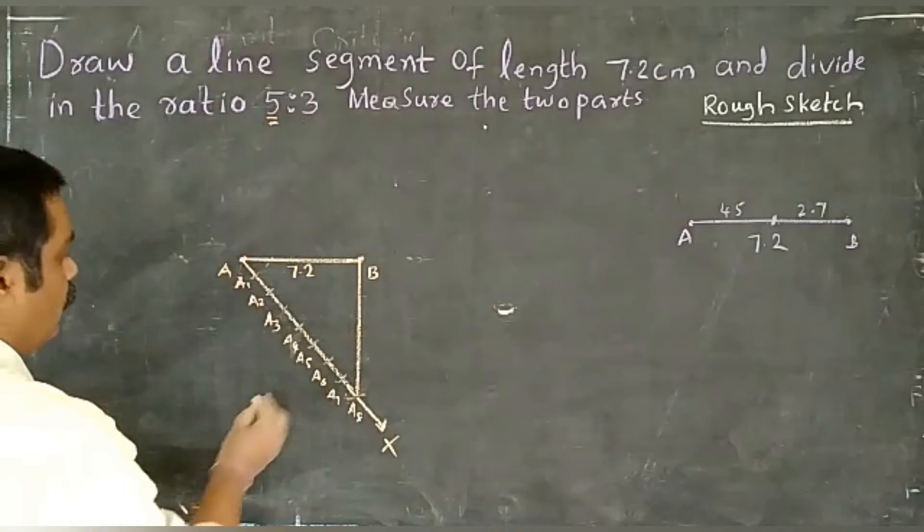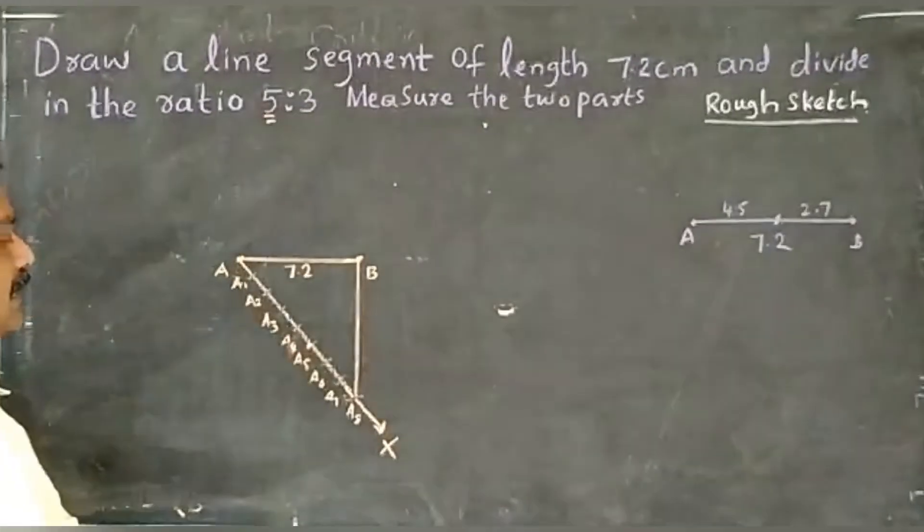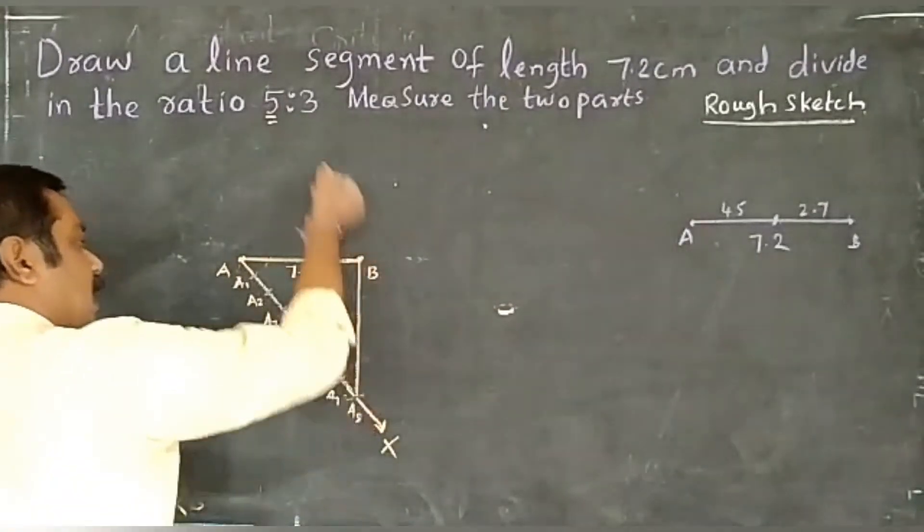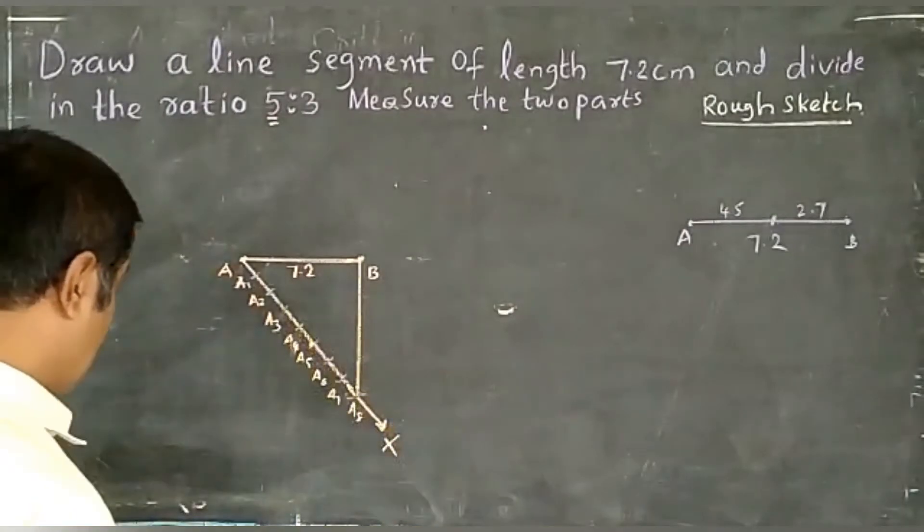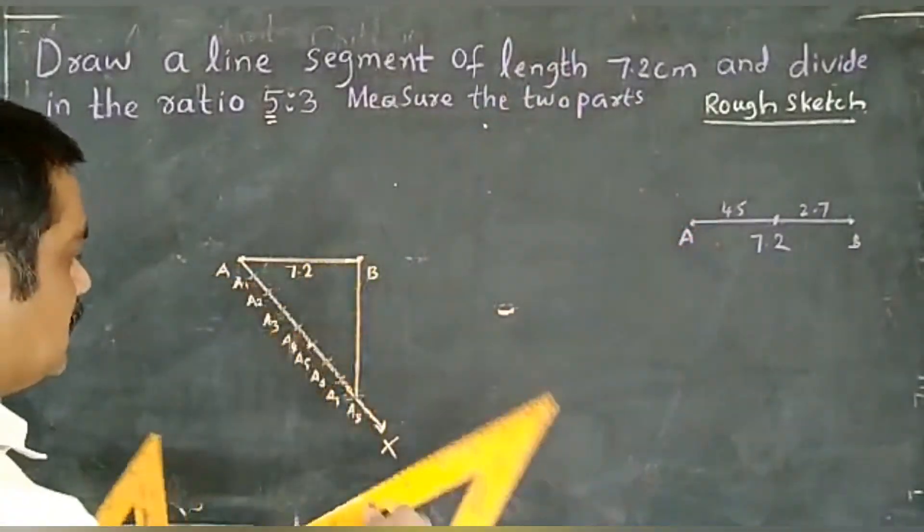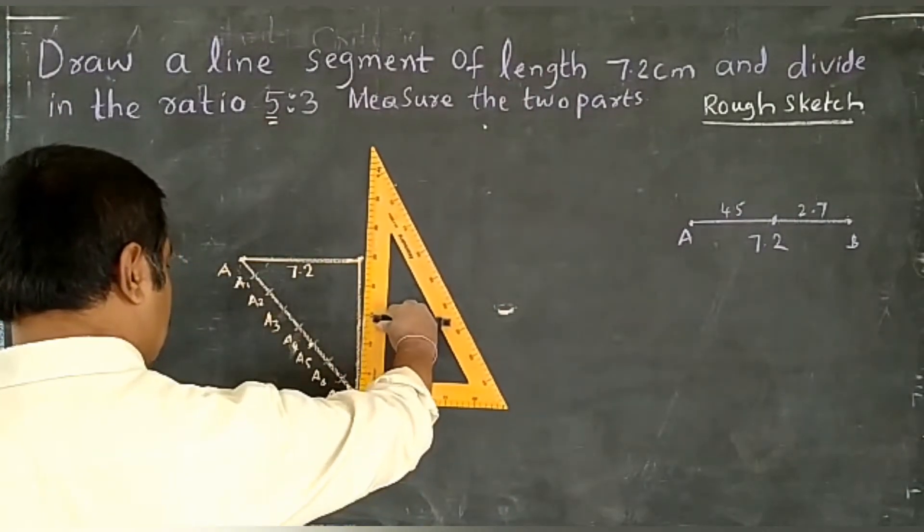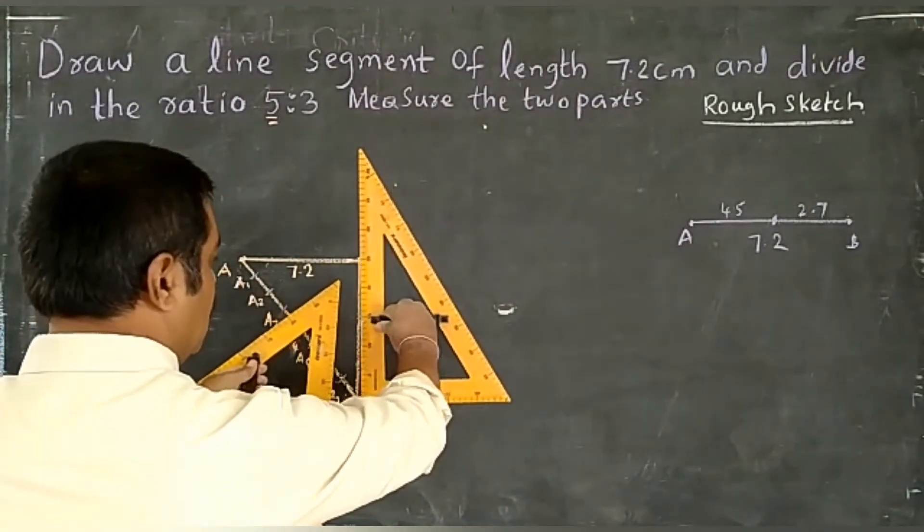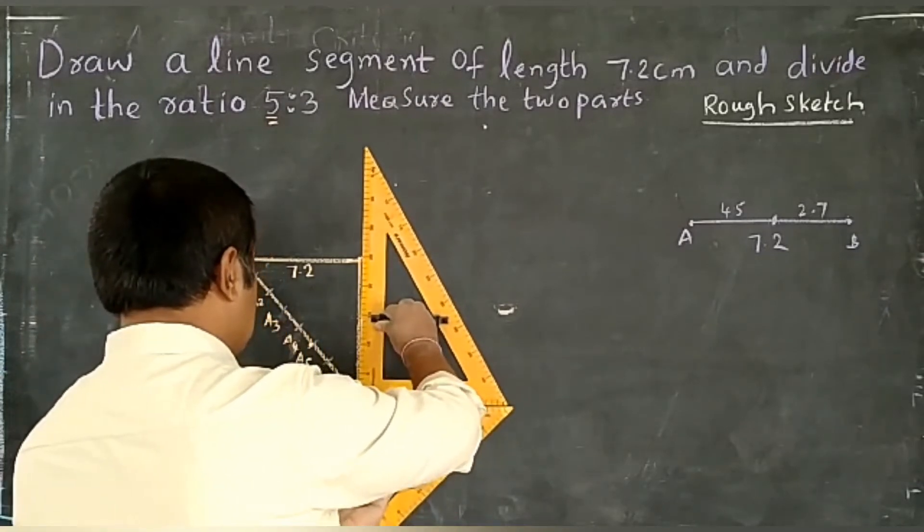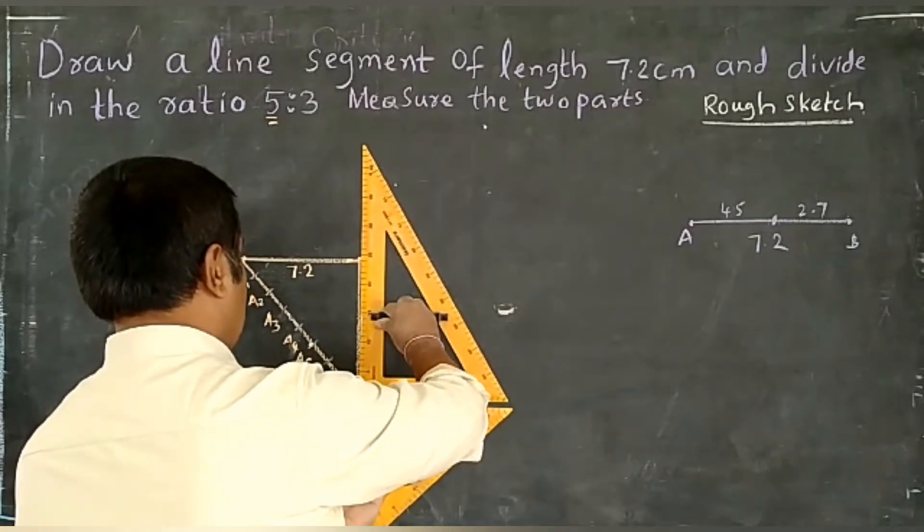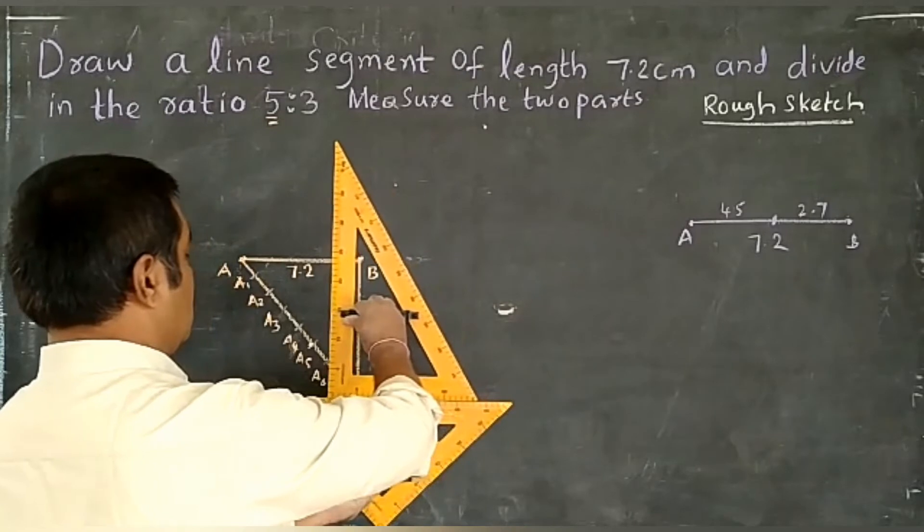From A5, draw a line which is parallel to A8B. How to draw parallel lines? Take the set square. Keep it at the place of B and A8, because for this line only we are going to draw the parallel line. Keep it down.